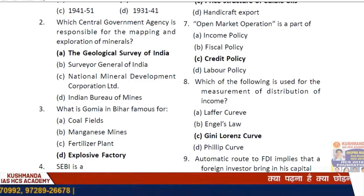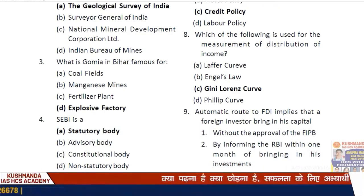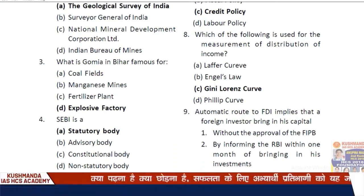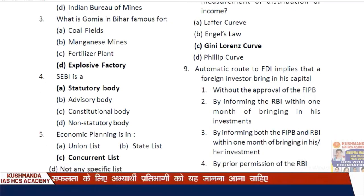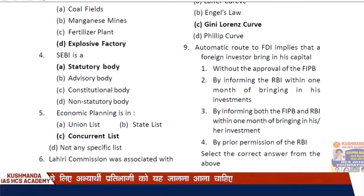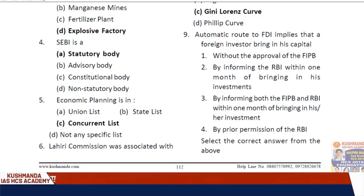Question 8: Which of the following is used for measurement of distribution of income? The answer is option C — the Gini coefficient and Lorenz curve.